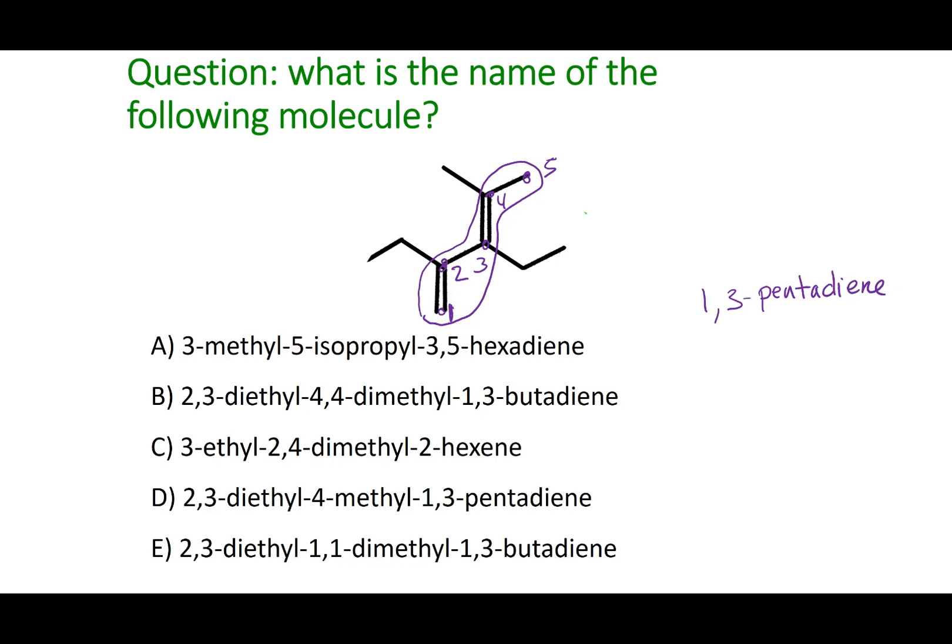Now let's take a look at my substituents. I got two carbons here, two carbons here, and a single carbon here. So the two carbons, well those are my ethyl substituents. And since there's two of them, it's going to be diethyl. They appear on carbons 2 and 3. Now my other substituent is only one carbon. So that's going to be my methyl substituent. And that appears on carbon number 4.